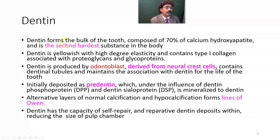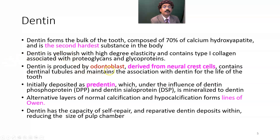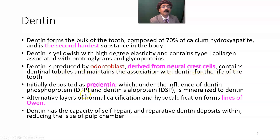Dentin forms the bulk of the tooth, composed of 70% calcium hydroxyapatite, and is the second hardest substance in the body. Dentin is yellowish in color, has a high degree of elasticity, and contains type 1 collagen associated with proteoglycans and glycoproteins. Dentin is produced by odontoblasts derived from neural crest cells. It contains dentinal tubules, and those tubules contain nerve fibers from the pulp.